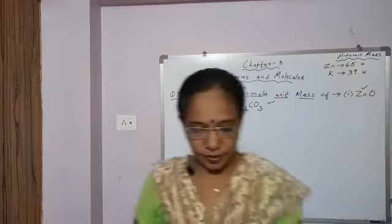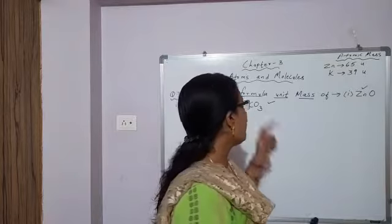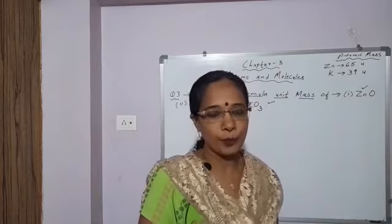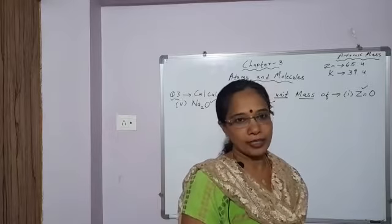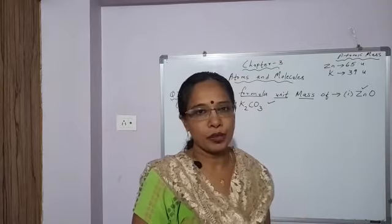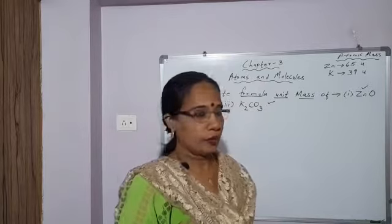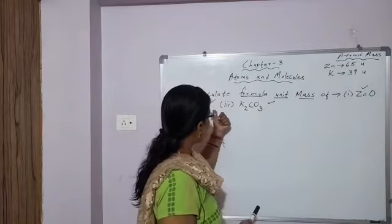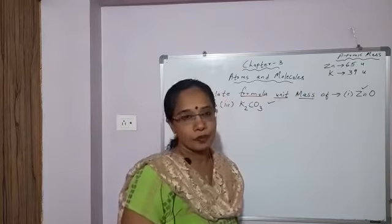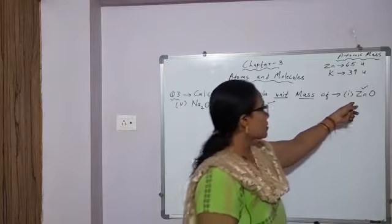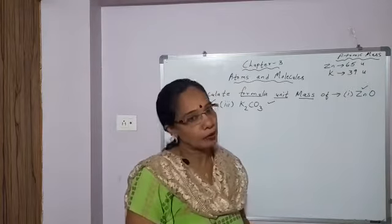Good morning dear students. Today we will continue with chapter 3, Atoms and Molecules. In the last class we discussed how to calculate the molecular mass of some substances. Today we will discuss the calculation of formula unit mass of zinc oxide, sodium oxide, and potassium carbonate.